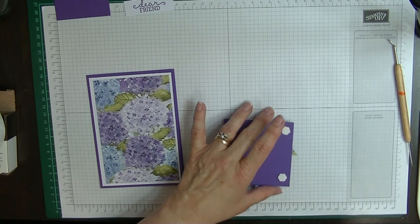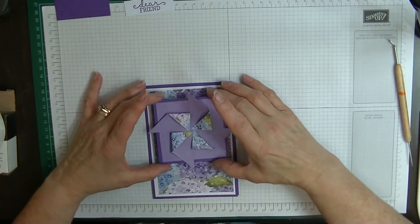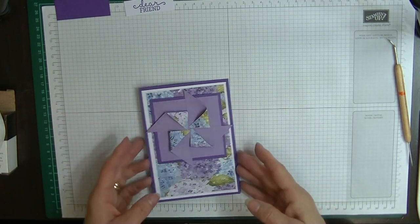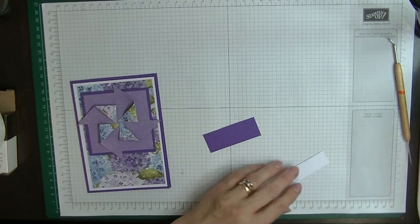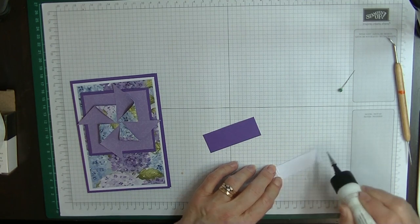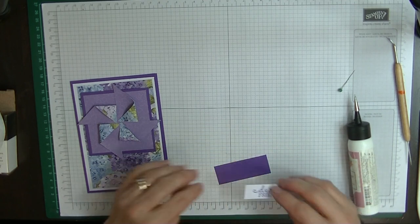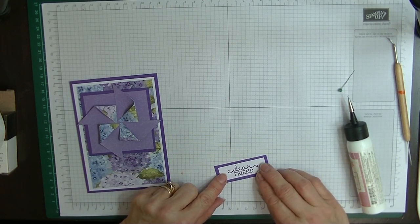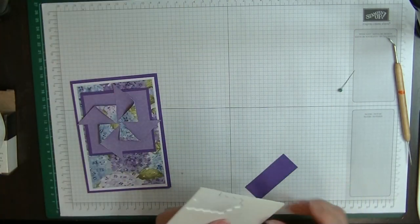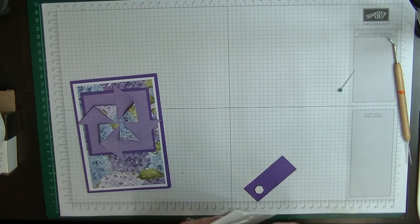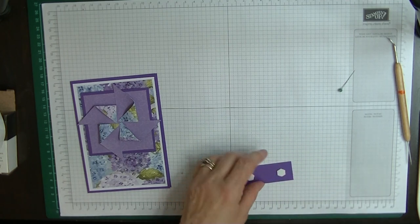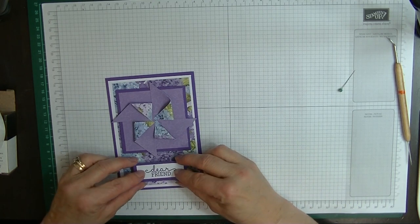I'm going to pop this into the middle of our card like so. We're going to then glue our sewing onto the front, our dear friend onto our piece here.